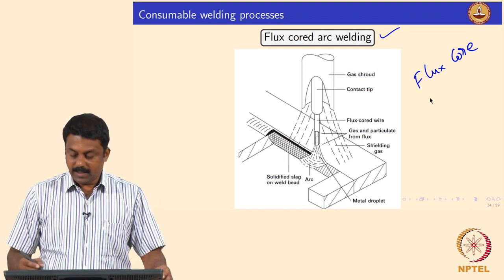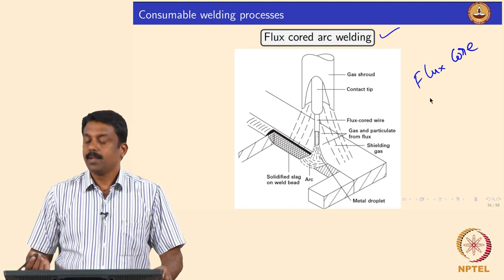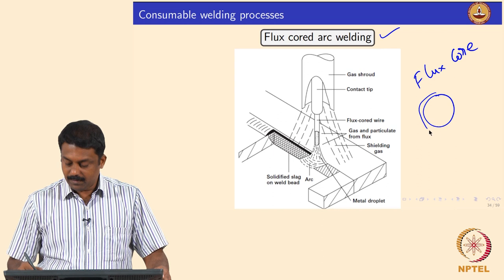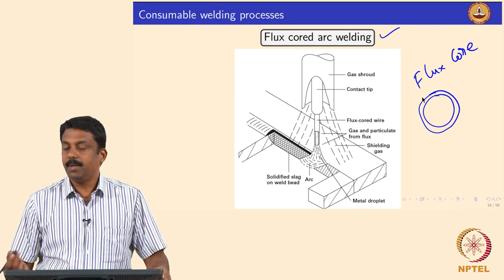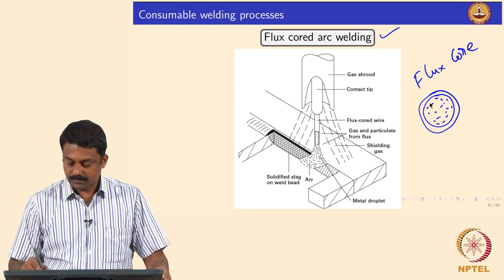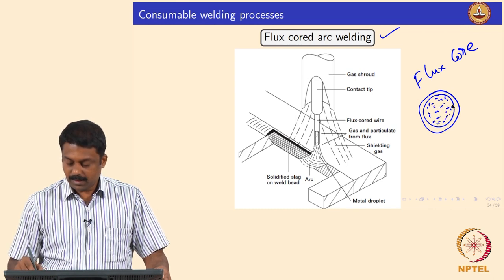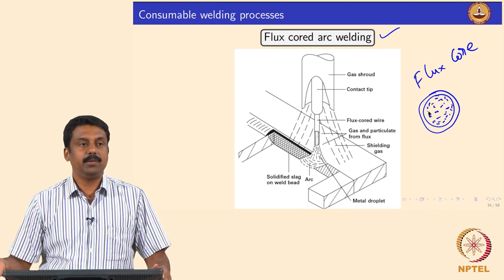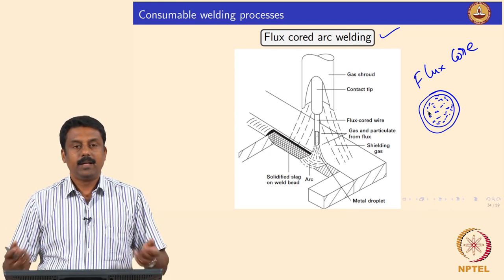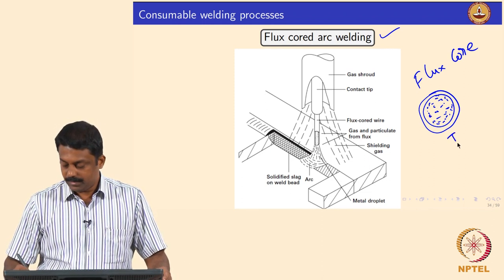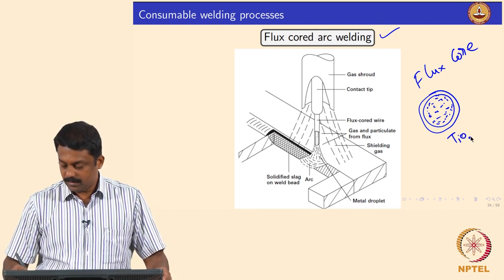Both advantages of GMAW and MMAW can be achieved by using flux cored arc welding electrodes. The only difference is the electrode geometry — we have a tube made of the material of interest, and you fill the tube with flux. The flux composition is the same as in MMAW; in most cases it is rutile-based, titanium oxide based fluxes.